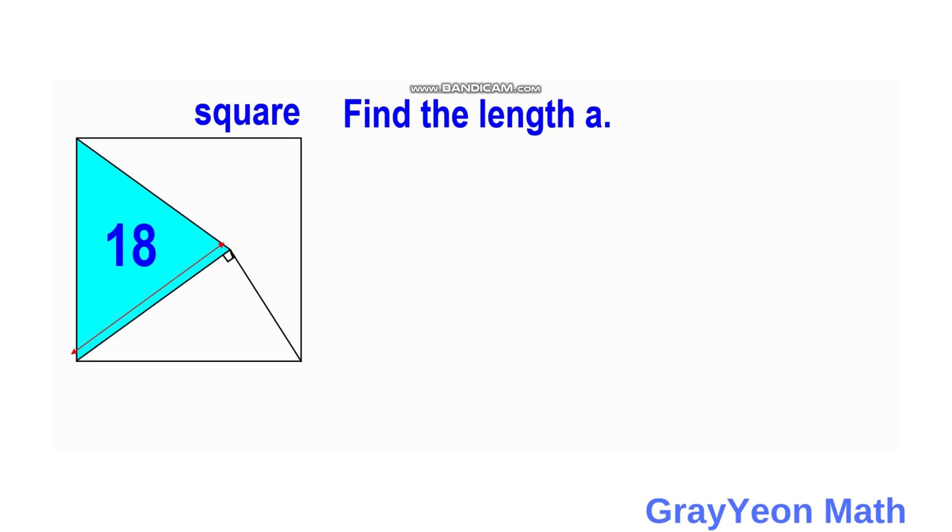First, we need to draw a line from this 90-degree angle downwards. We already labeled this as A and this leg as B. Next, we labeled the sides of the square as S.